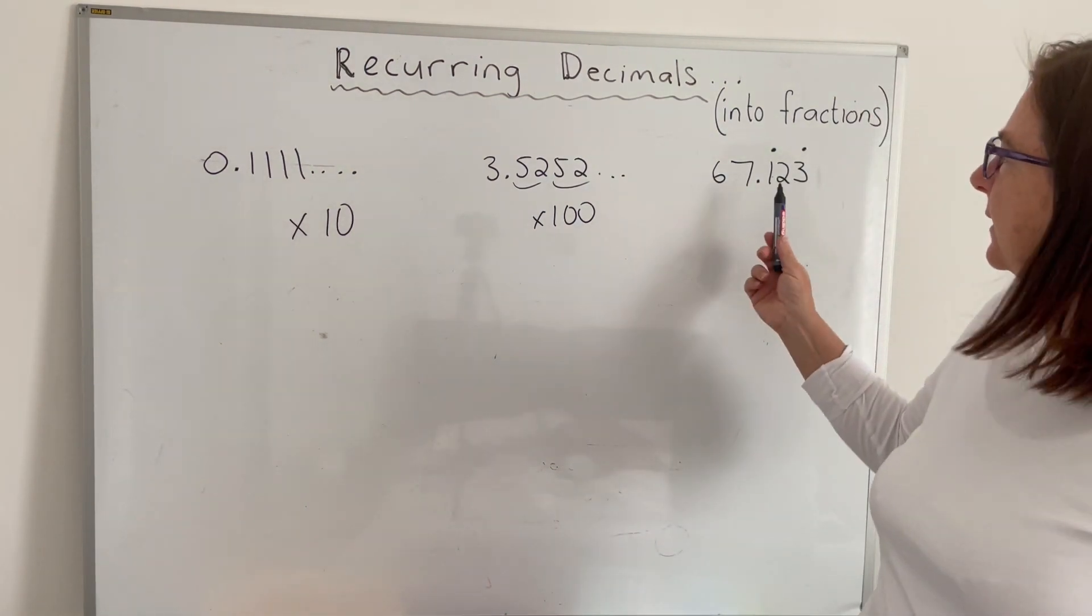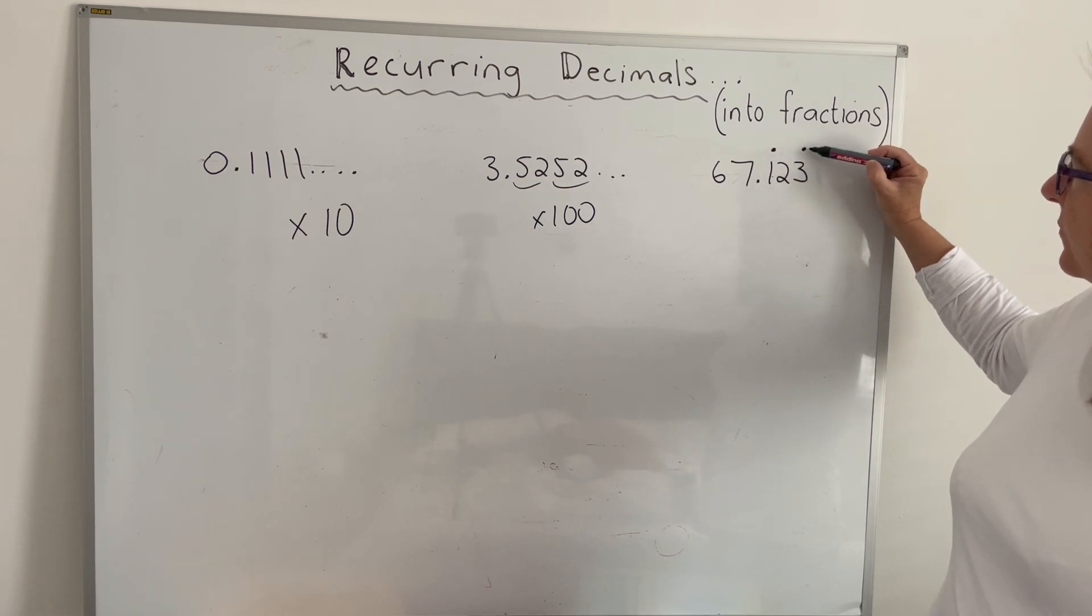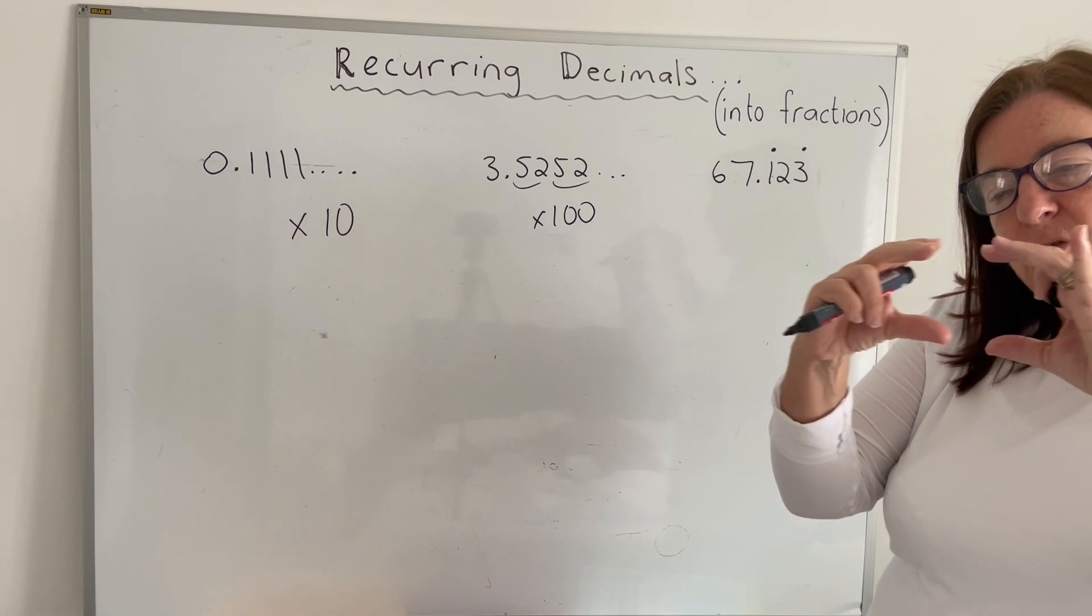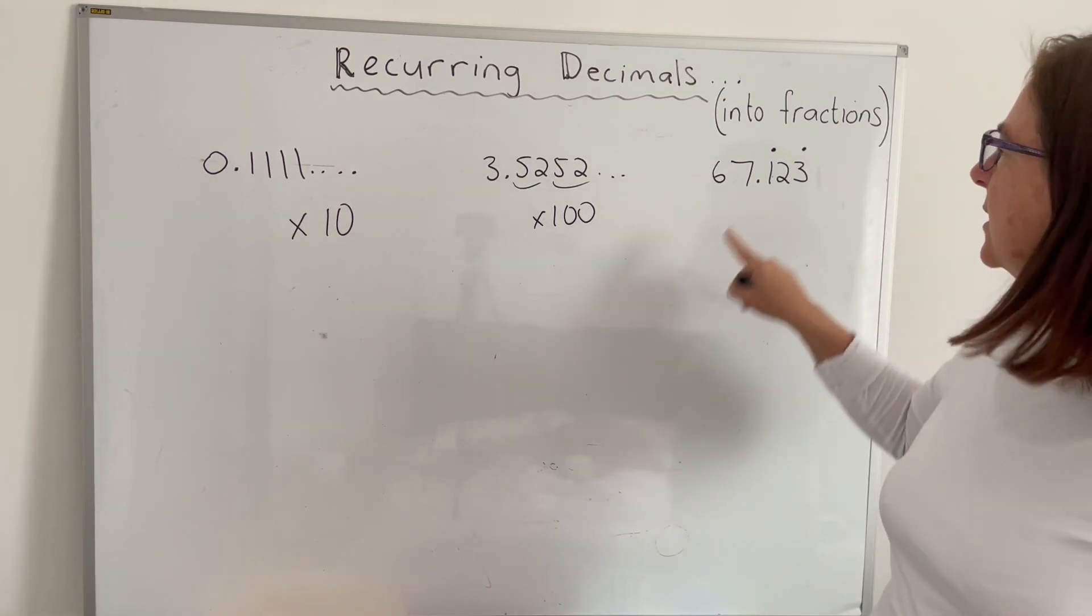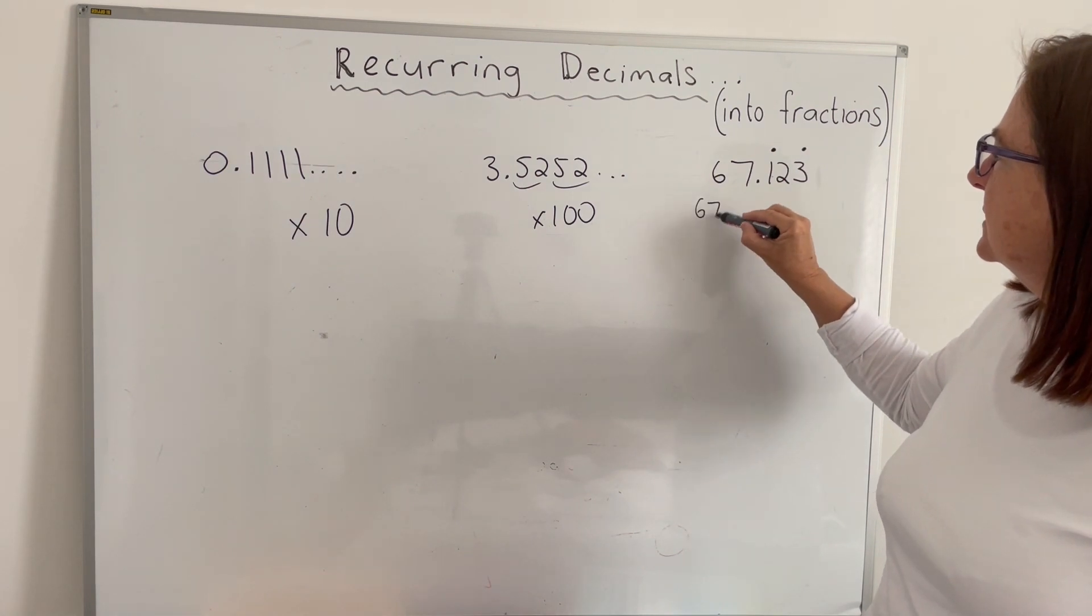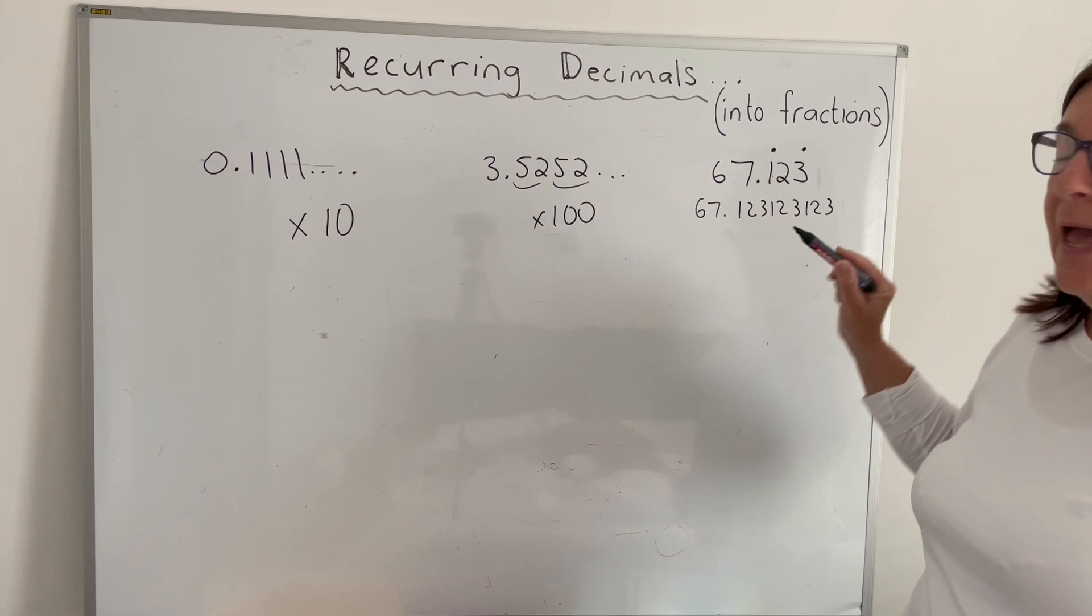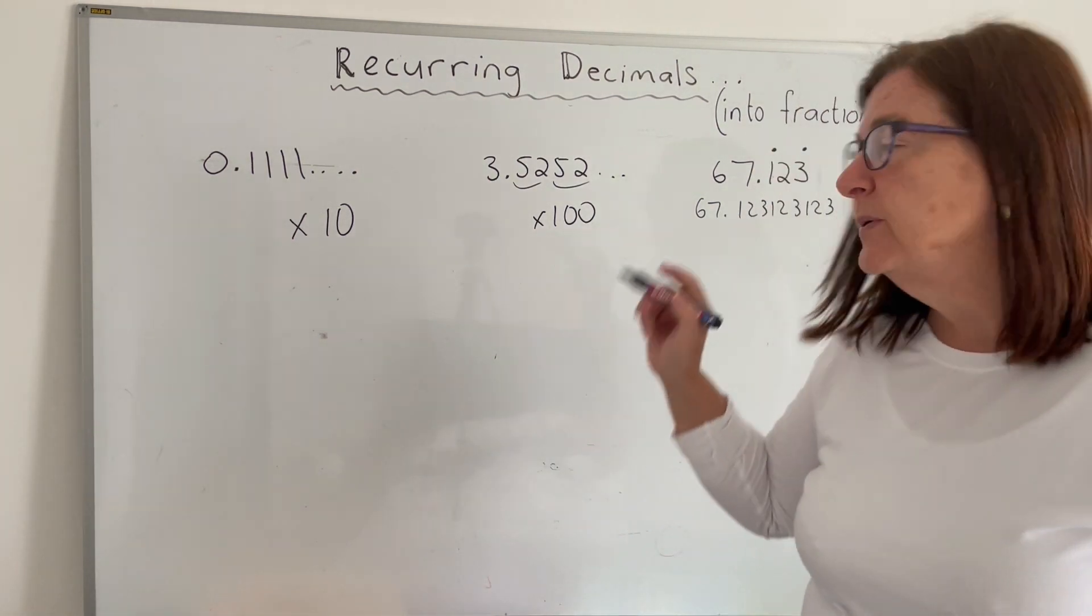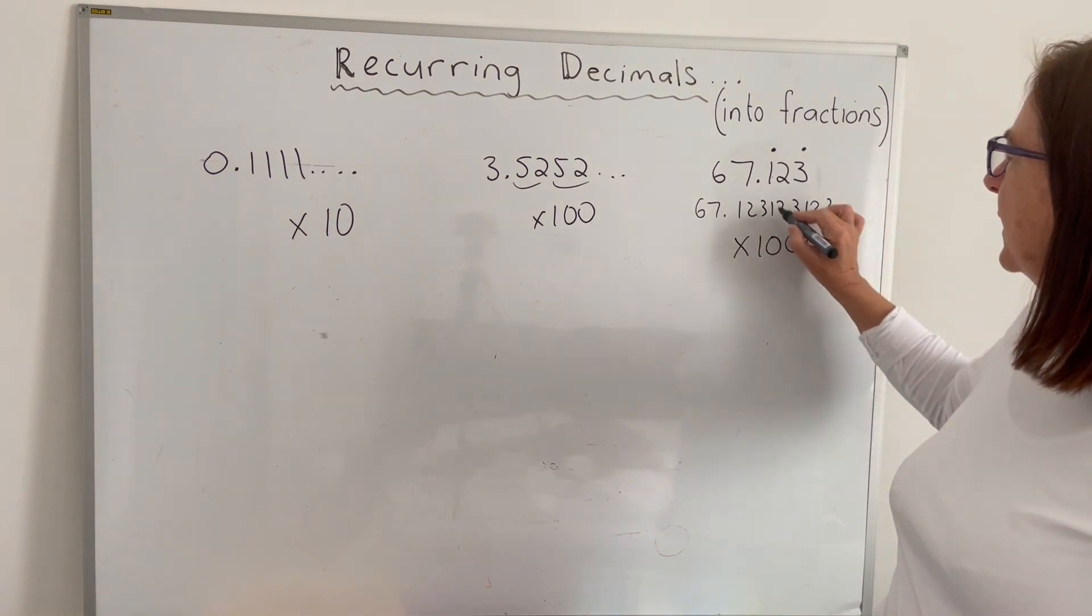And in this example here, remember this notation? That means that if that little dot's on the top of the one and on top of the three, it means that those three digits and everything in between are also repeating itself or recurring. So this would be 67.123123123 etc. And because there's three recurring digits in this particular example, this one, we would have to multiply both sides by 1000.